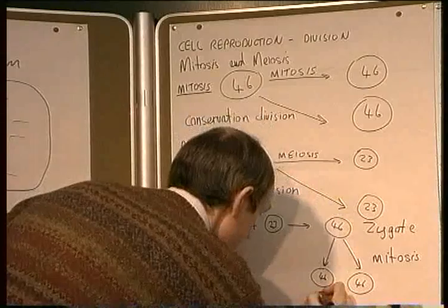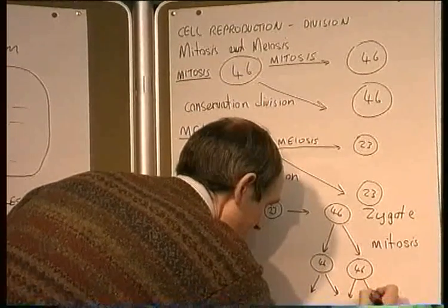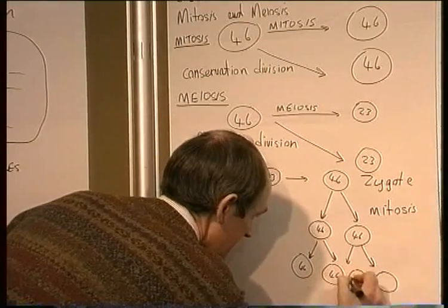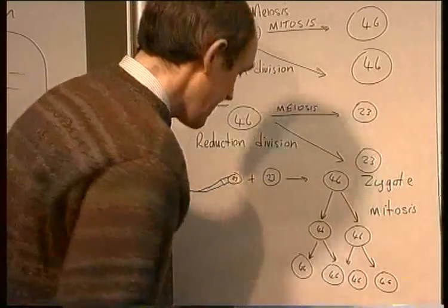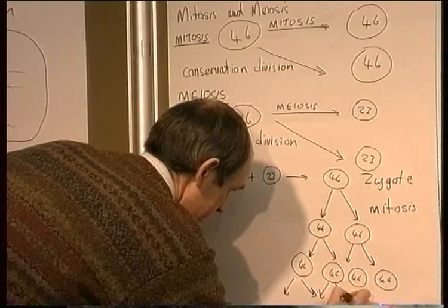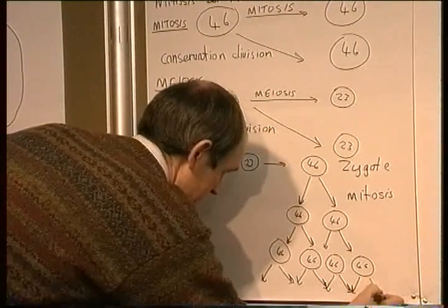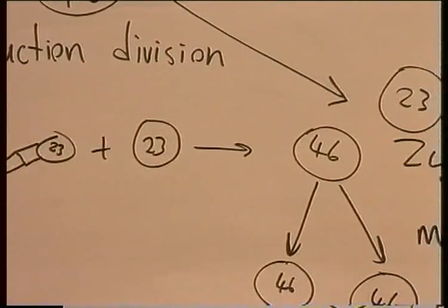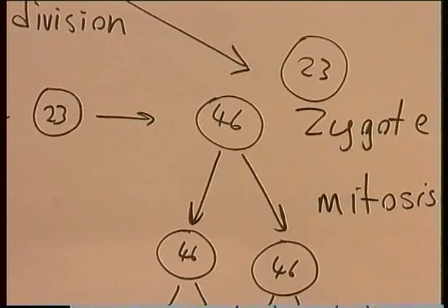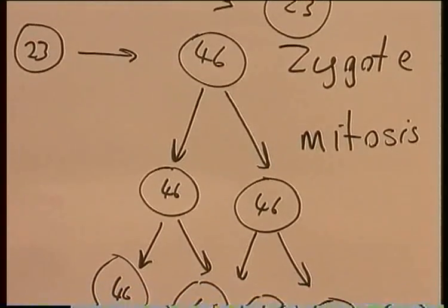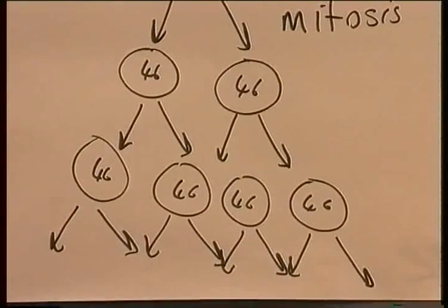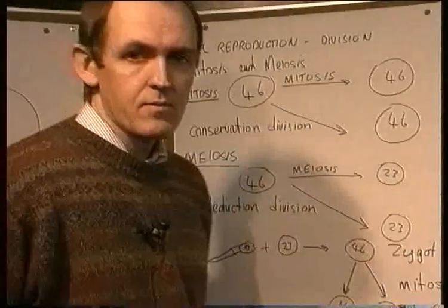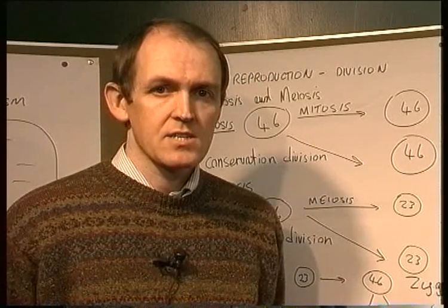These two cells divided again, giving four cells each with 46 chromosomes. Then each of these divided again, and so on — eight cells with 46 chromosomes, 16, 32, 64 — until you were formed. So, the growth of the baby in the uterus takes place as a result of mitosis.